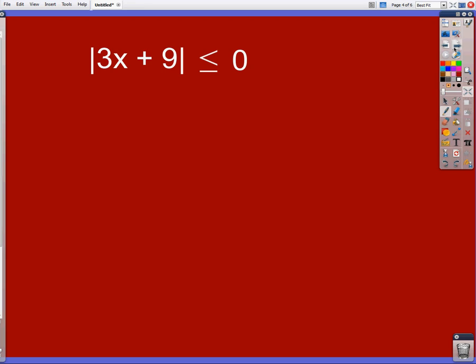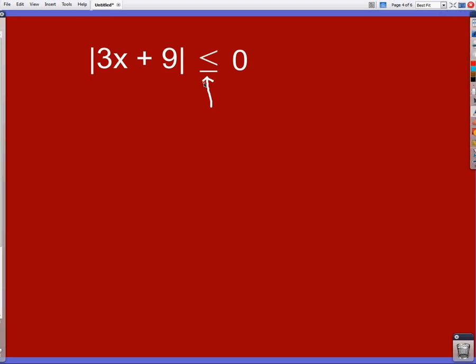Now the last type says what happens if, is it possible to get an answer when an absolute value is less than or equal to zero? Well, going back to our original idea that absolute values have to be greater than or equal to zero, the answer to the question is yes. Now the majority of answers will not work, because they will always give you something that is greater than zero. The only time that you can get something that actually works is when it equals zero.